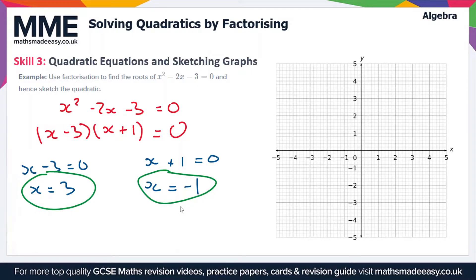So this is going to give us the two roots of the quadratic. So what this means is this is where the graph of y equals x squared minus 2x minus 3, this is where this graph crosses the x-axis. So let's mark on these points.